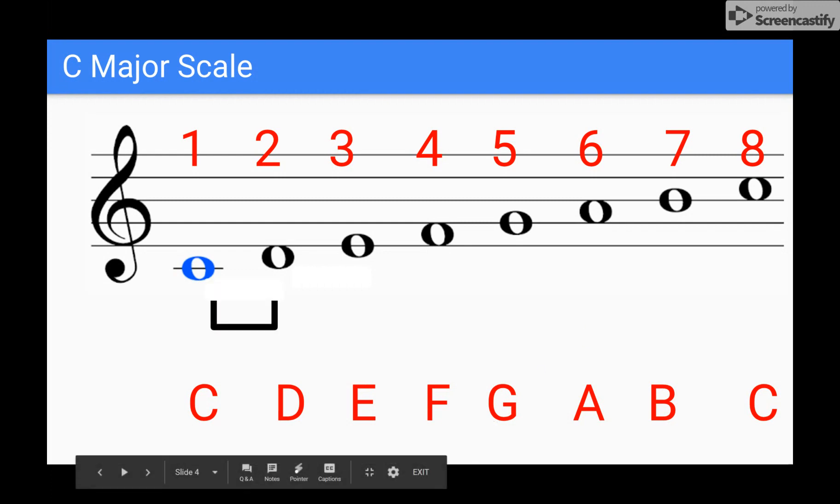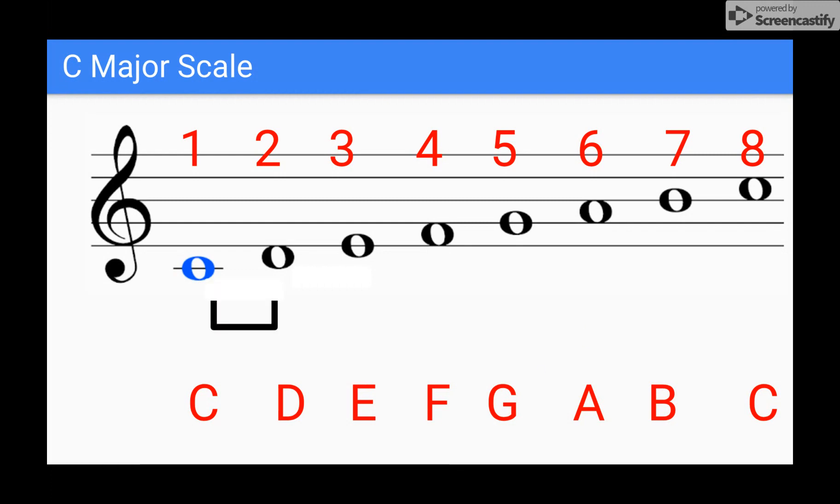Our formula remains the same. As we do this, I want you to take a look at a keyboard. C to D is a whole step, so we don't have to change any of the pitches. We don't have to alter them in any way. Between D and E we need another whole step. If we consult our keyboard, we will notice that that is in fact a whole step.